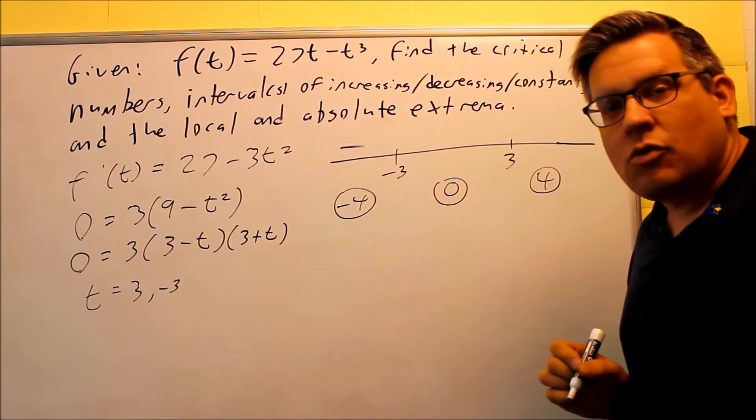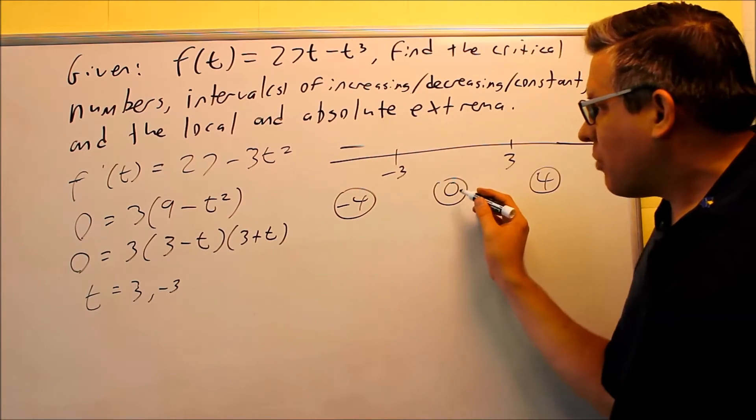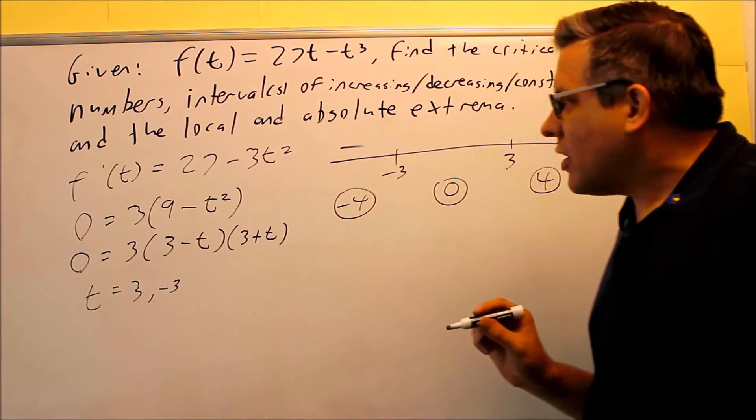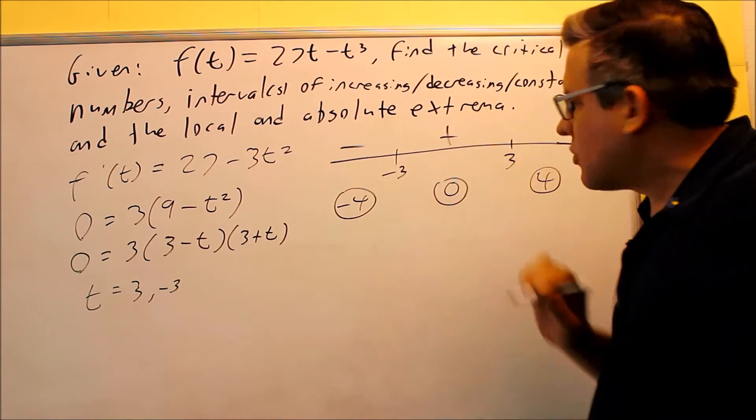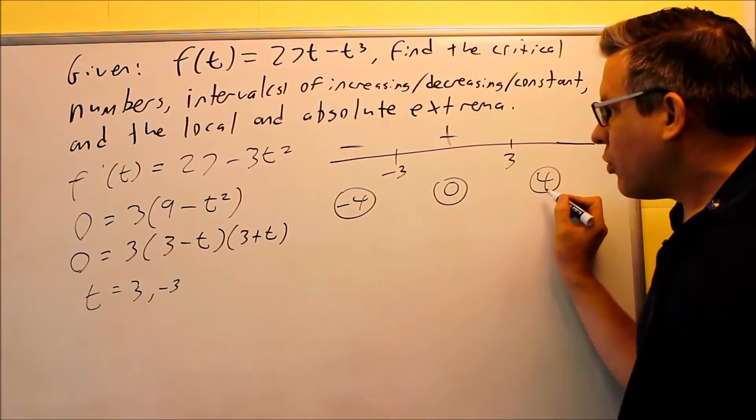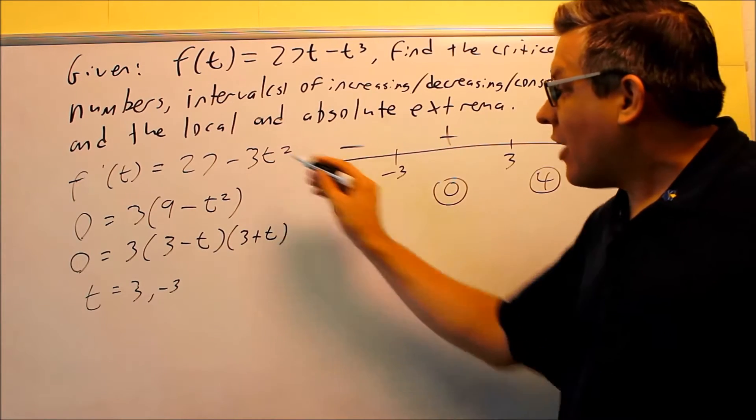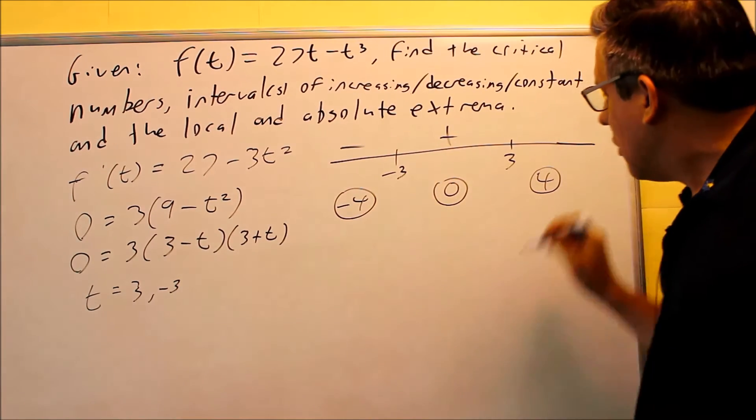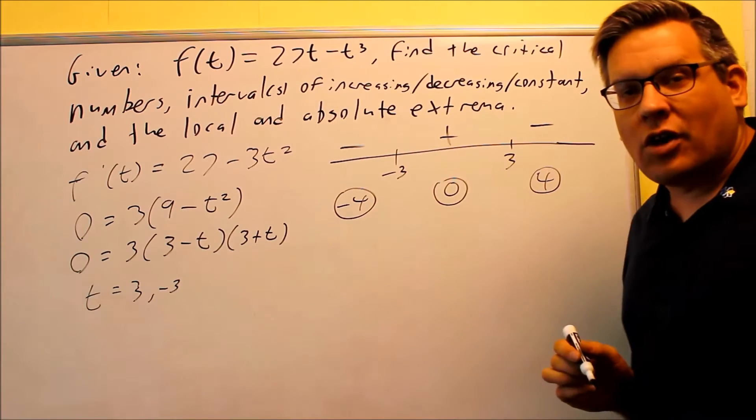Next, if I plug 0 into this, I get 27 minus 0. That's positive. And then if I put 4 in here, I'll get the same exact result as I got with negative 4. I'll get a negative value there.